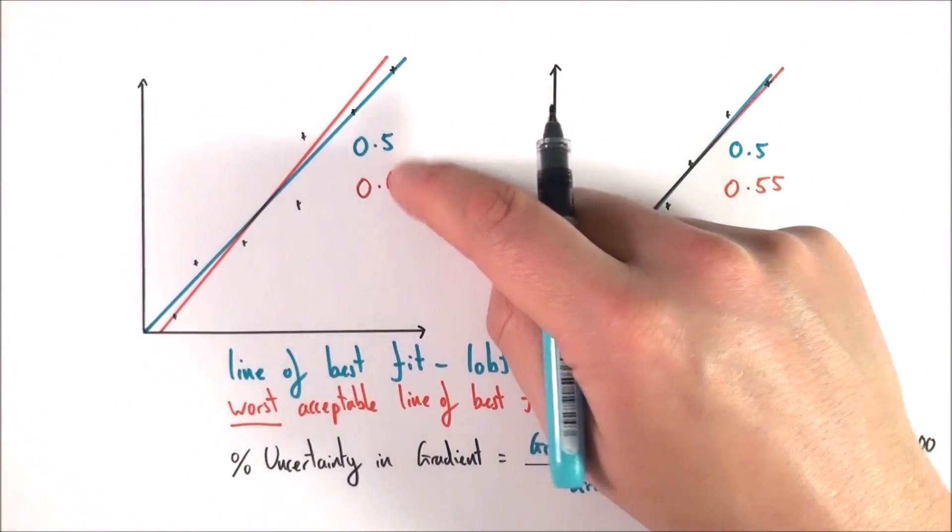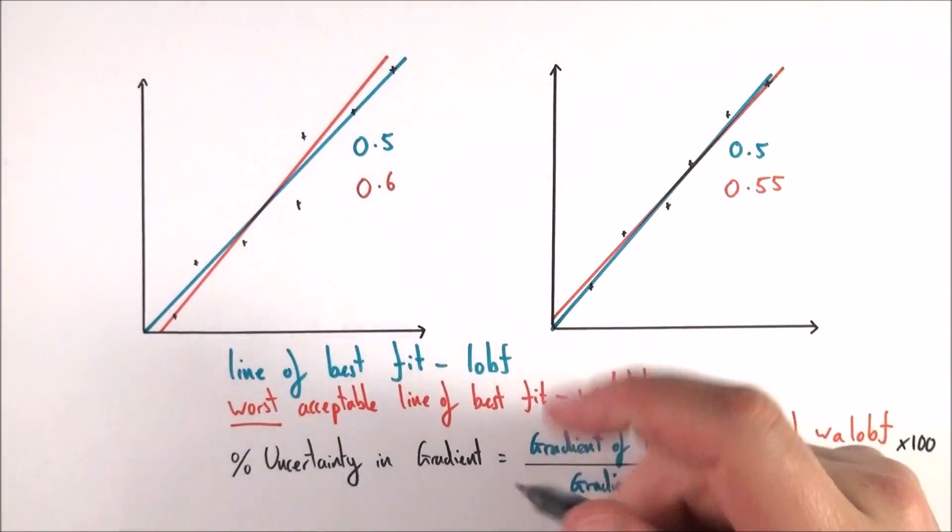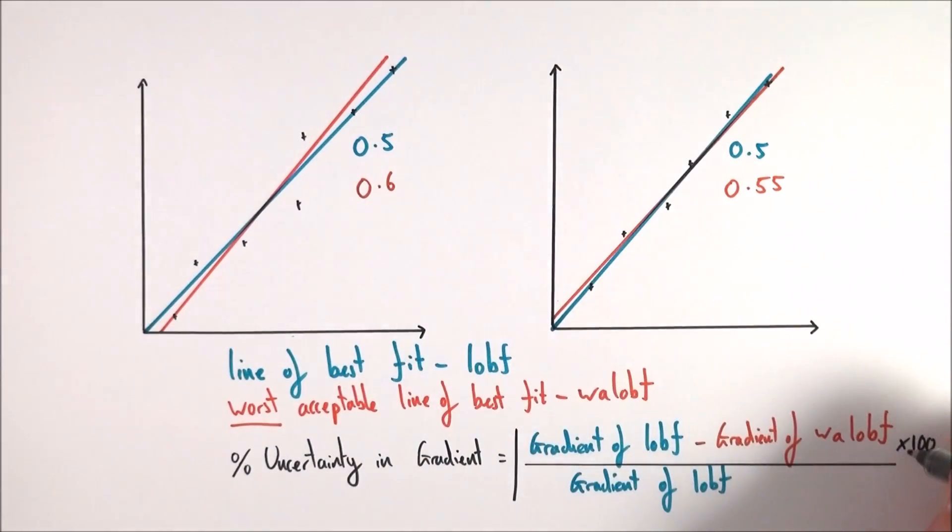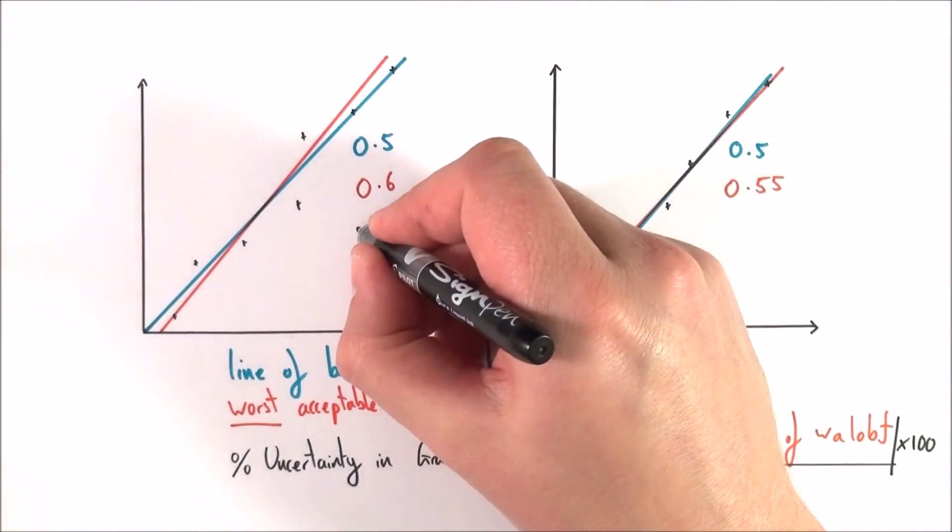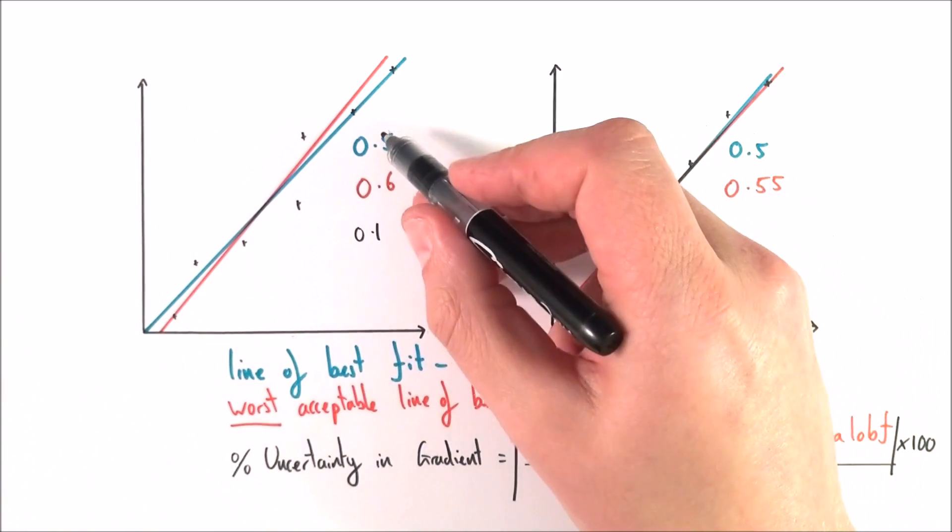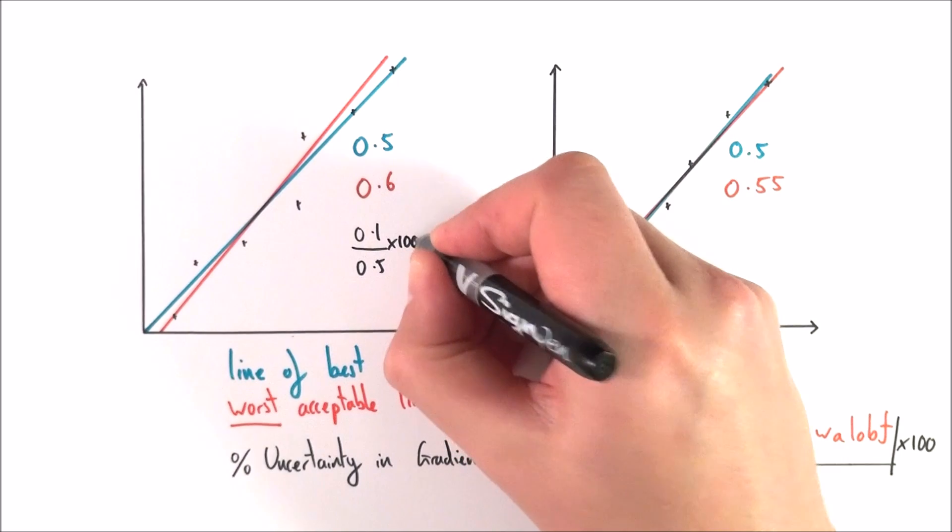Now if we look at this one here, the difference between these two things, and really we often just talk about effectively we don't really want to necessarily know if it's positive or negative, we just want to know the size of that difference. In this case, the difference between the two is equal to 0.1. We divide that by what it should be, which is 0.5, we multiply it by 100, and then we get a percentage uncertainty here of 20%.